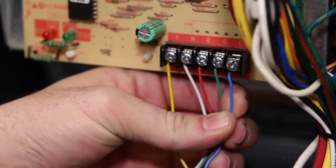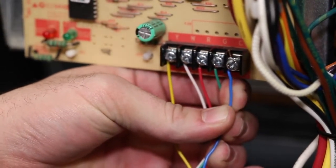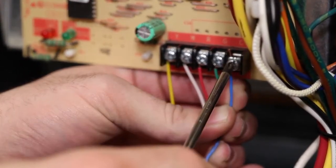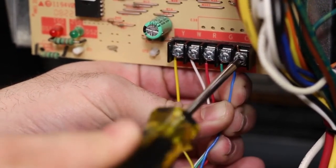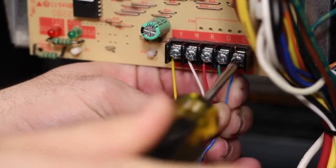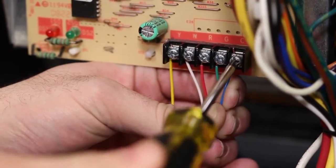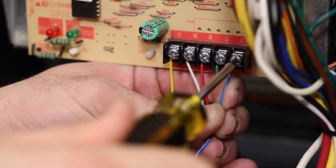On most control boards, you simply loosen the screw, insert the exposed wire to the side of the screw, and tighten. Your control board may be a little different, so take a look at how your other terminal wires are attached and secure this new wire to the C terminal the same way.